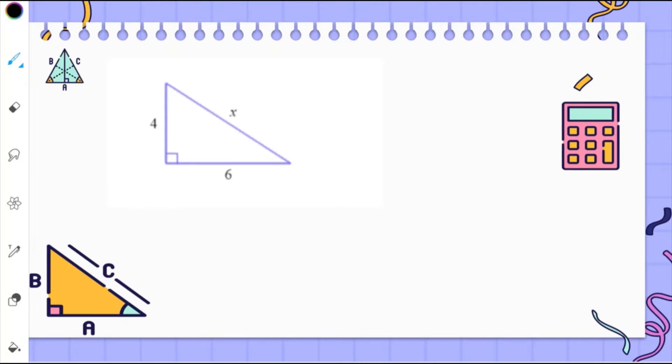First we're going to form an equation from Pythagoras theorem, which is a squared plus b squared is equal to c squared. So this will be considered as a, and this as b, and this is x.